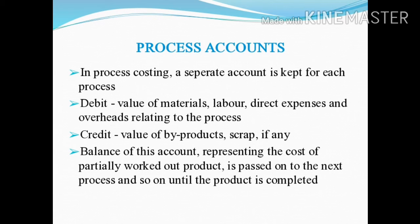The concerned process account is debited with the value of materials, labour cost, direct expenses, and overheads. Each process — process 1, process 2, and process 3 — relates to its respective process account on the debit side. This account is also credited with the value of byproducts and scrap, if any.